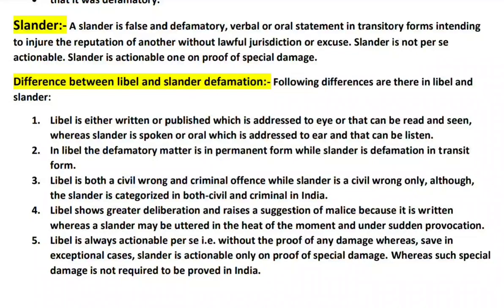In libel, the defamatory matter is in permanent form — the matter is published and becomes a permanent form. In slander, the defamatory matter is in transitory form — it is spoken and thus temporary. Libel is both a civil wrong and a criminal offense, whereas slander is generally considered only a civil wrong, although in India, slander is categorized under both civil and criminal, yet it is treated primarily as a civil wrong.